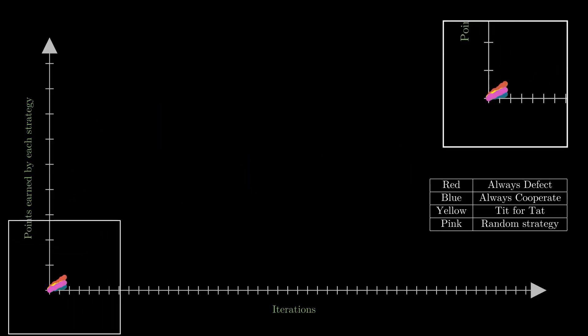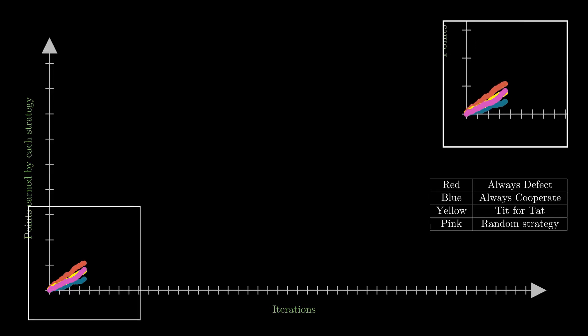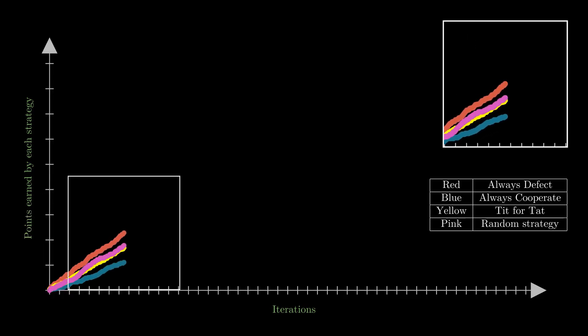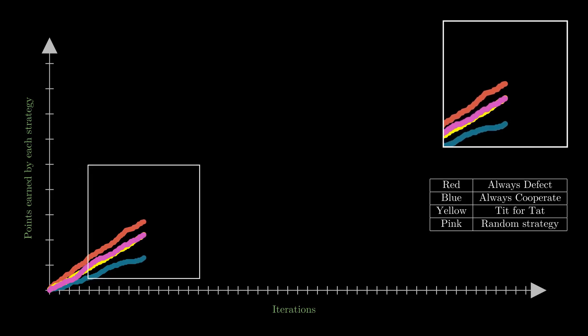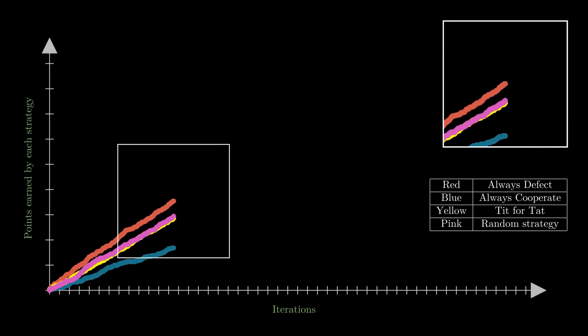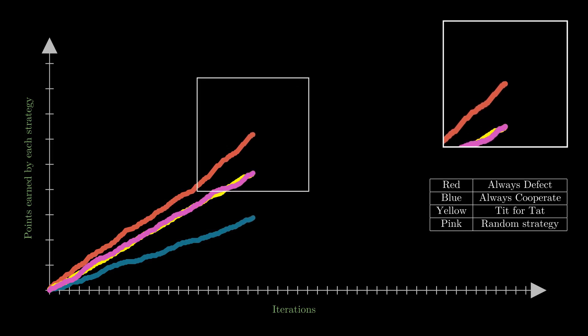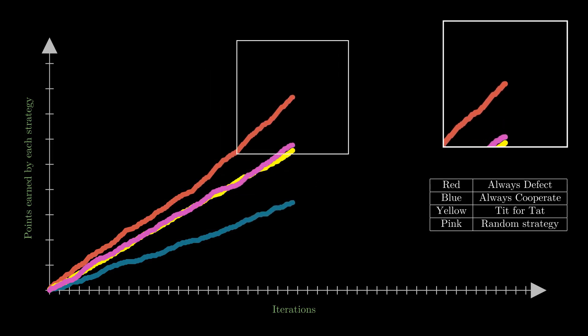When we are pitted against the random strategy, if you are always defect strategy, you either get five points or two points depending upon what the random strategy does. If you are always cooperate strategy, you either get three points or zero points. Does that sound familiar? It's exactly similar to the non-iterated version that I just talked about. This always defect strategy is better than always cooperate strategy in this particular case.